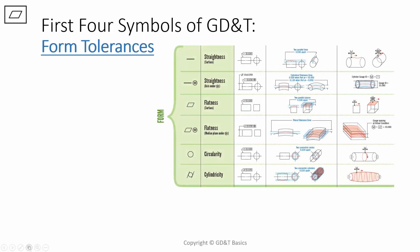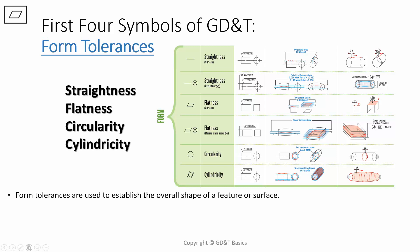These all share fairly similar properties. These include straightness, flatness, circularity, and cylindricity. Form tolerances are used to establish the overall shape of a feature or surface. These symbols never reference datums or other features. They're only held relative to themselves, and you're just controlling the shape of the feature.